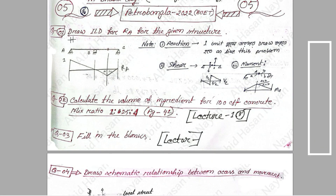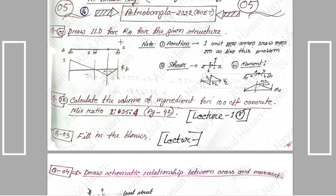First we will see: Draw the Influence Line Diagram — what is the reaction at A for the given structure? A is the reaction as well as A.